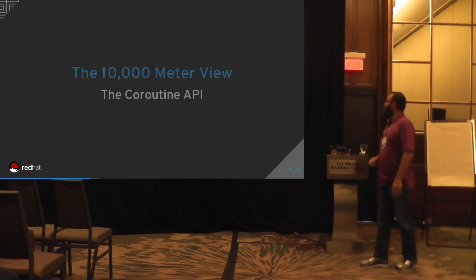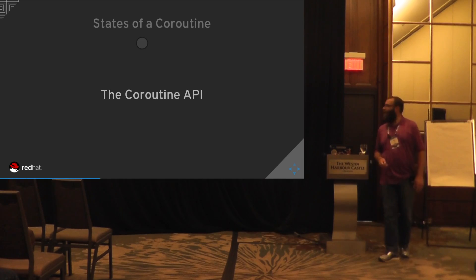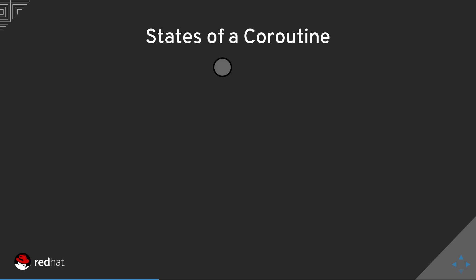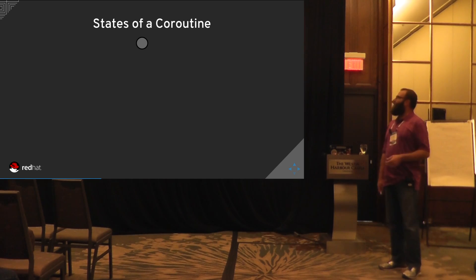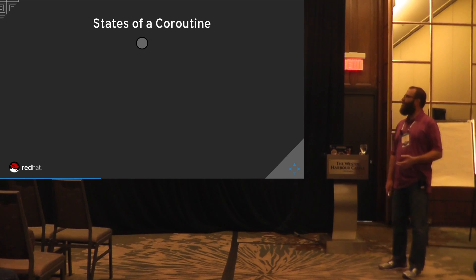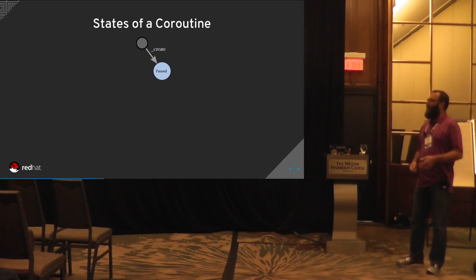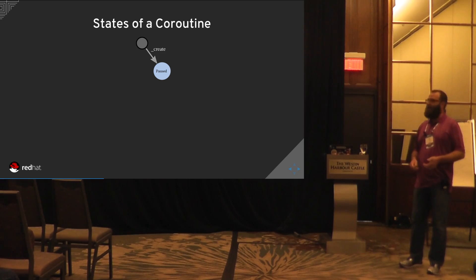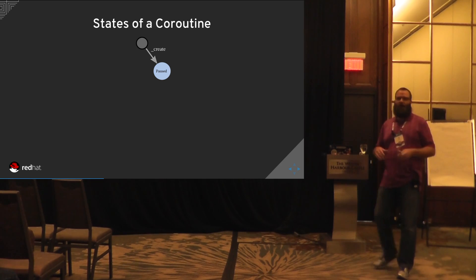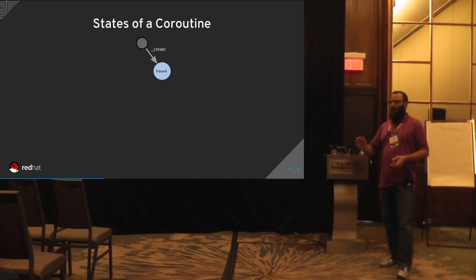Looking at the states of a coroutine in QEMU: when we create a coroutine, it exists in a paused state. We set up the stack buffers and context buffers, then immediately jump back out to the caller of the coroutine create function. So we're paused right above the function call — a coroutine is essentially a function call. The next time we resume, we'll enter that function call. This only applies the very first time you do coroutine creation.